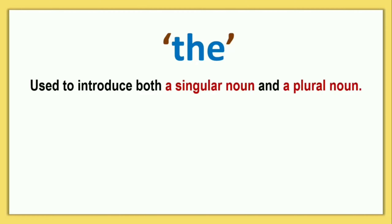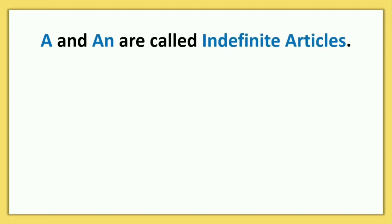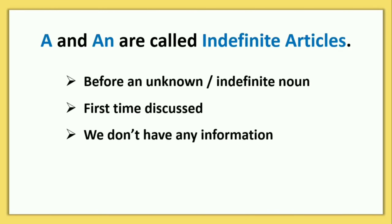THE is used to introduce both a singular noun and a plural noun. THE तब use करते हैं जब हम किसी चीज़ के बारे में specially बता रहे हैं। A and AN are called indefinite articles, which are used before an unknown or indefinite noun — when we discuss something for the first time and we don't have any information about it।